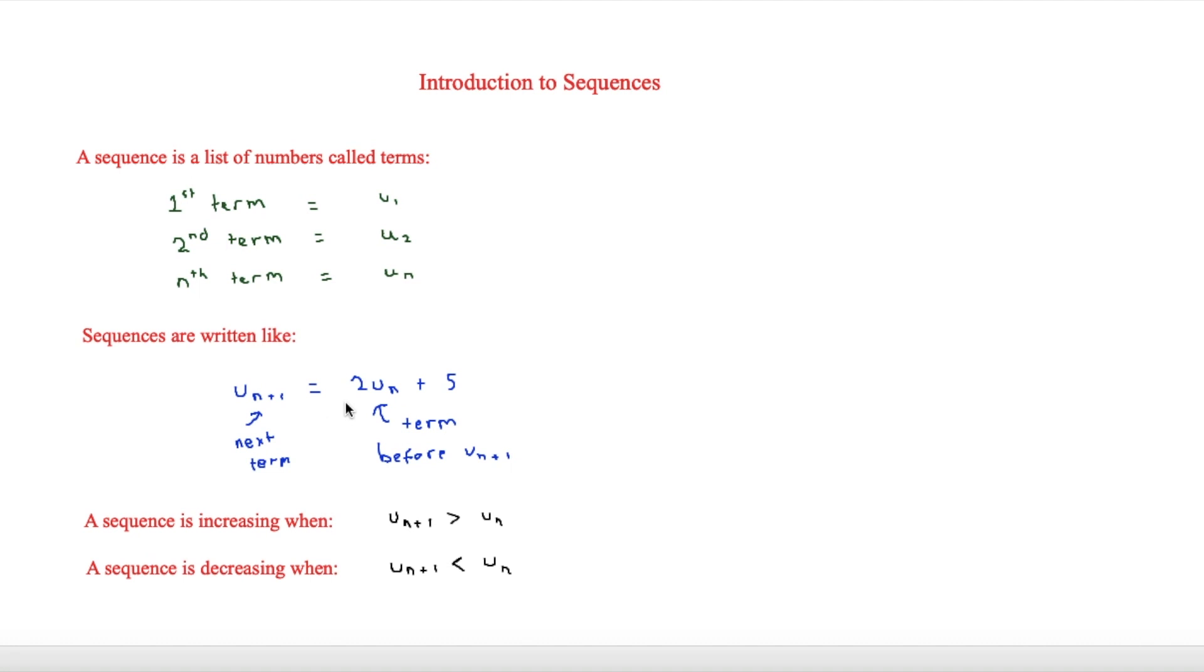And then 2un plus 5. So the 2un is just a term before un plus 1. So for example, if we had 5 as un, then that would mean that un plus 1 would be 2 times 5 plus 5, which is equal to 15 and that's the next term.